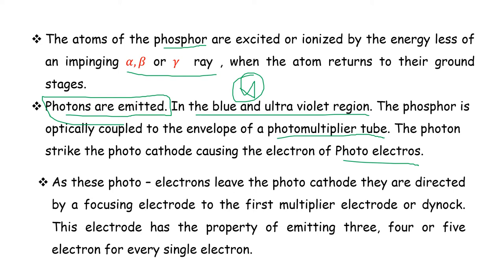As these photoelectrons leave the photocathode, they are directed by a focusing electrode to the first multiplier electrode or dynode. This electrode has the property of emitting 3, 4, or 5 electrons for every single electron. The photoelectrons leaving the photocathode are directed by a focusing electrode to the first multiplier electrode or dynode.